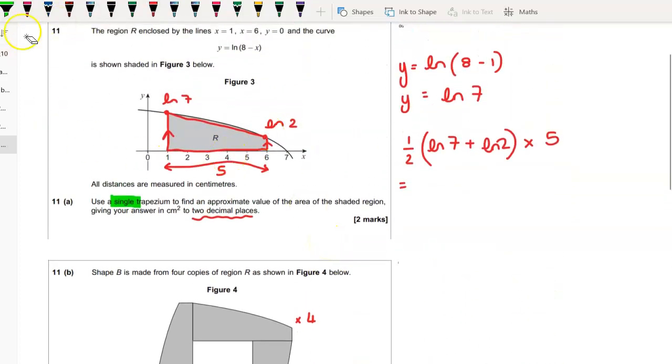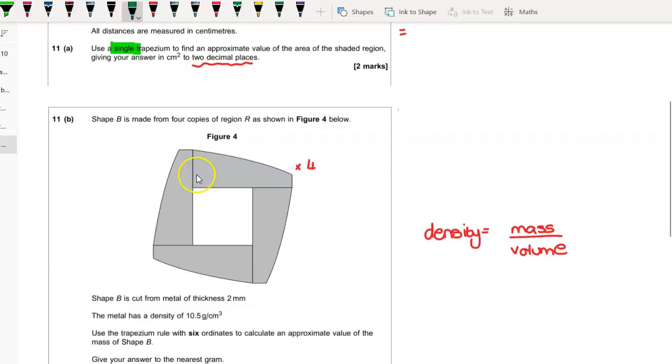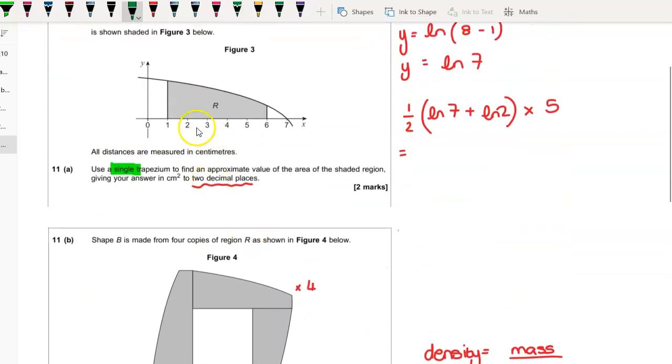Now this is when you use your trapezium rule on this shape. So it says six ordinates. Six ordinates means five strips - one, two, three, four, five strips and six ordinates.